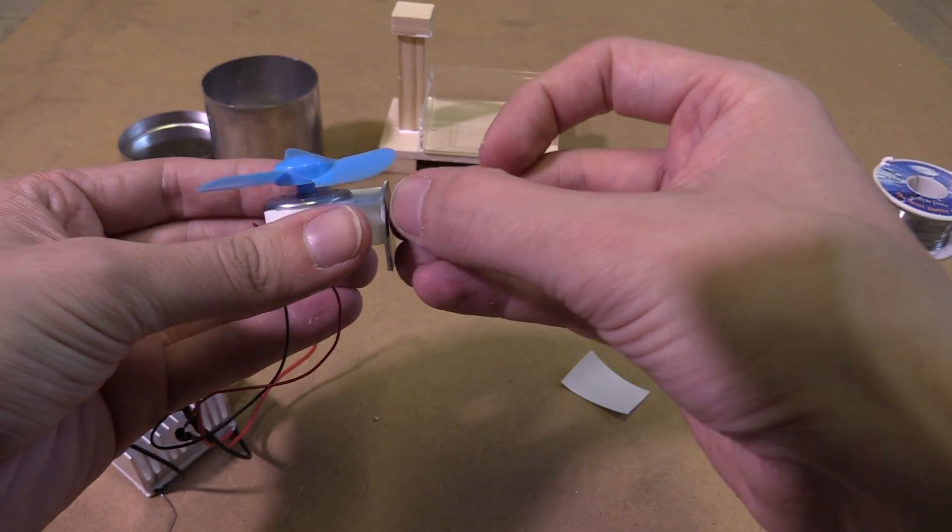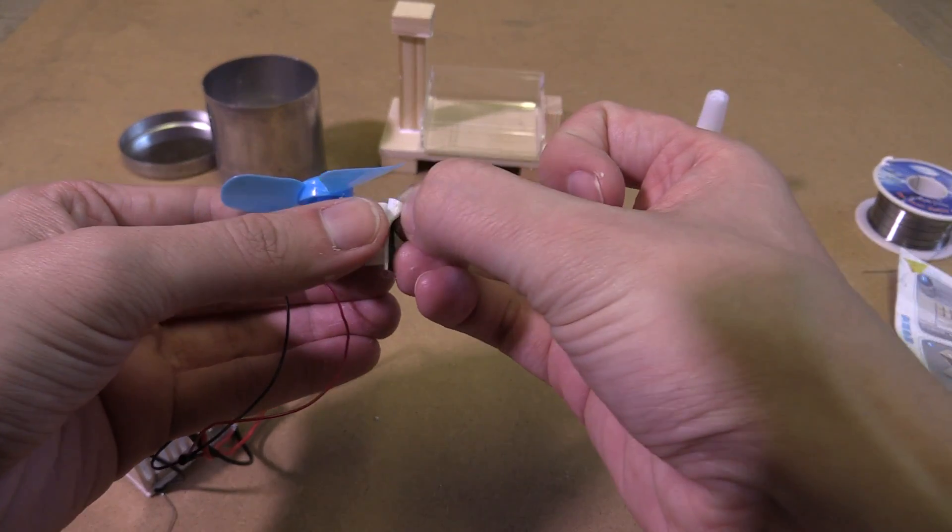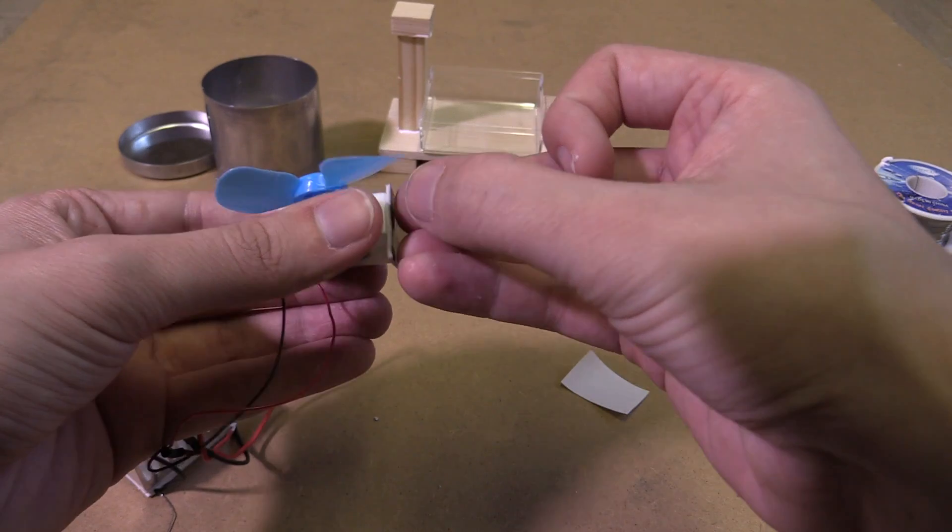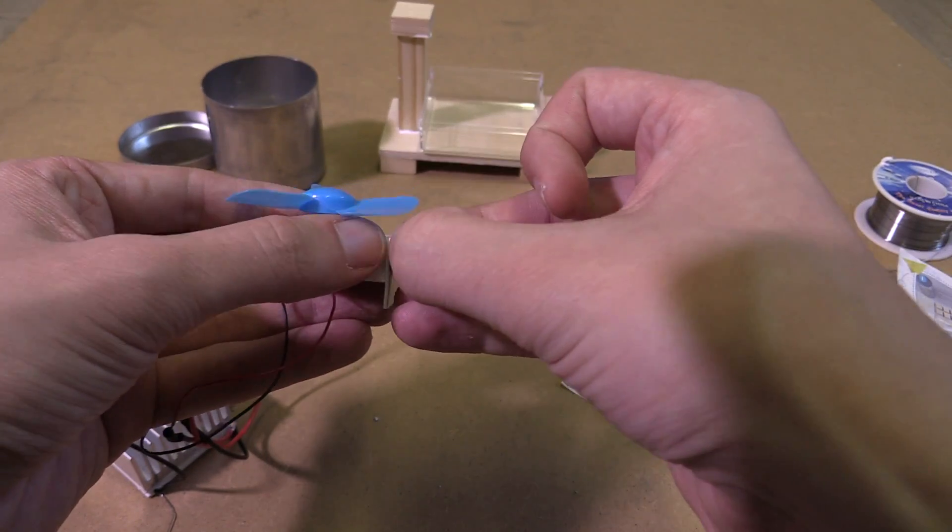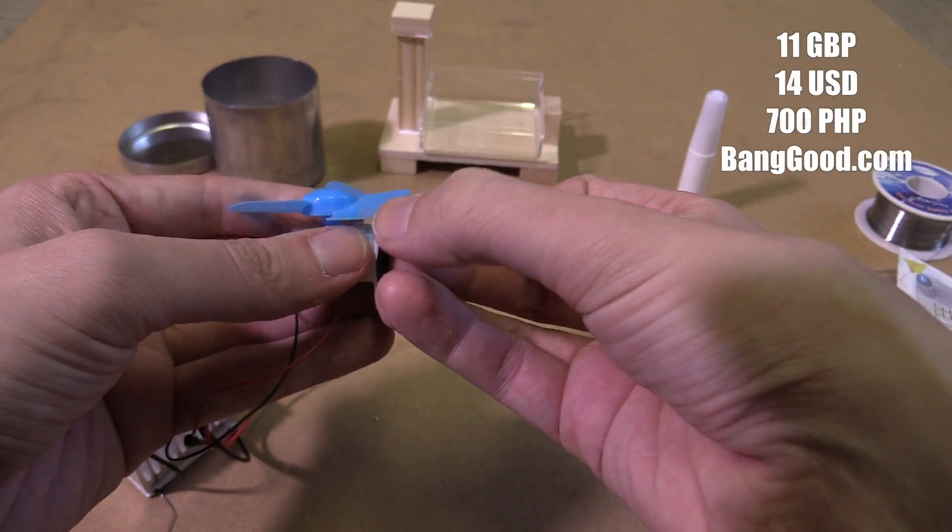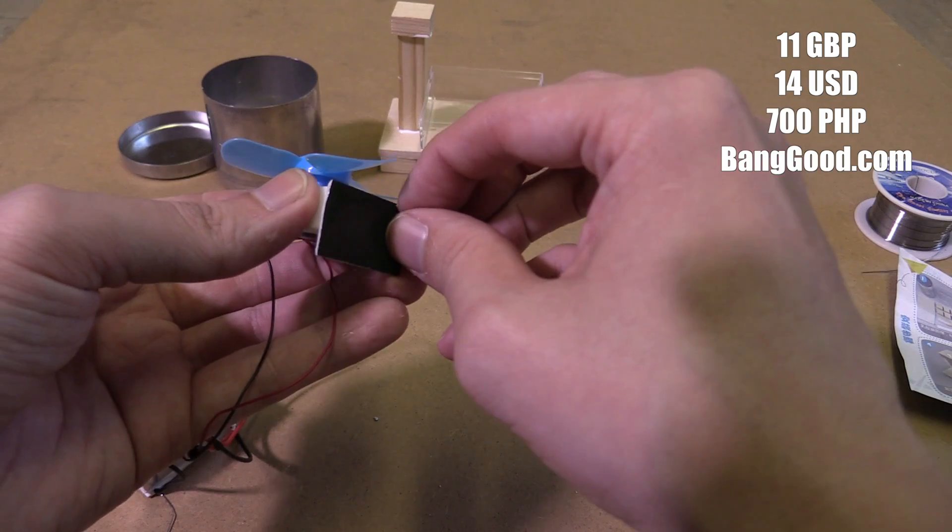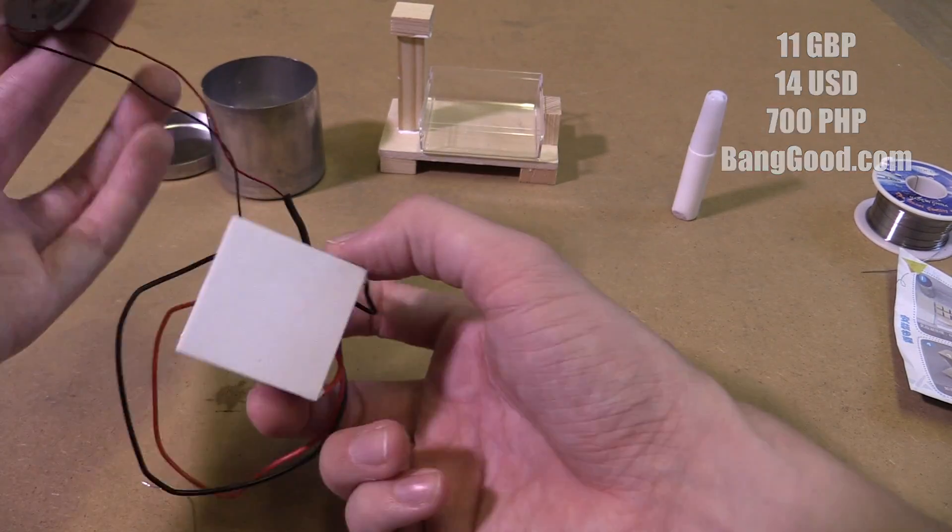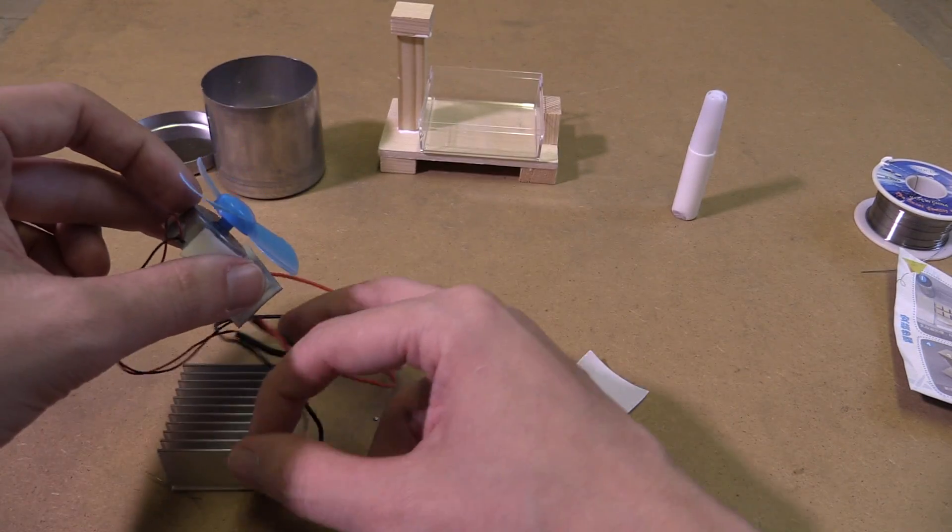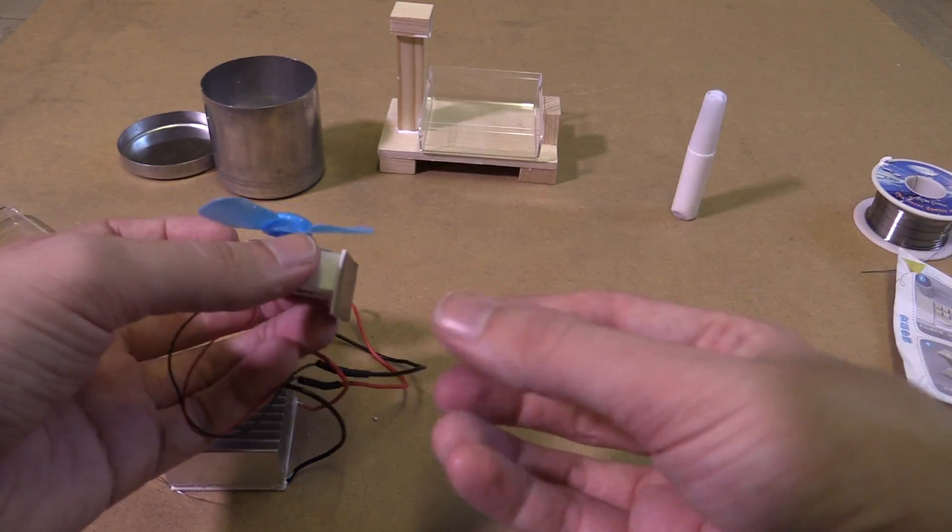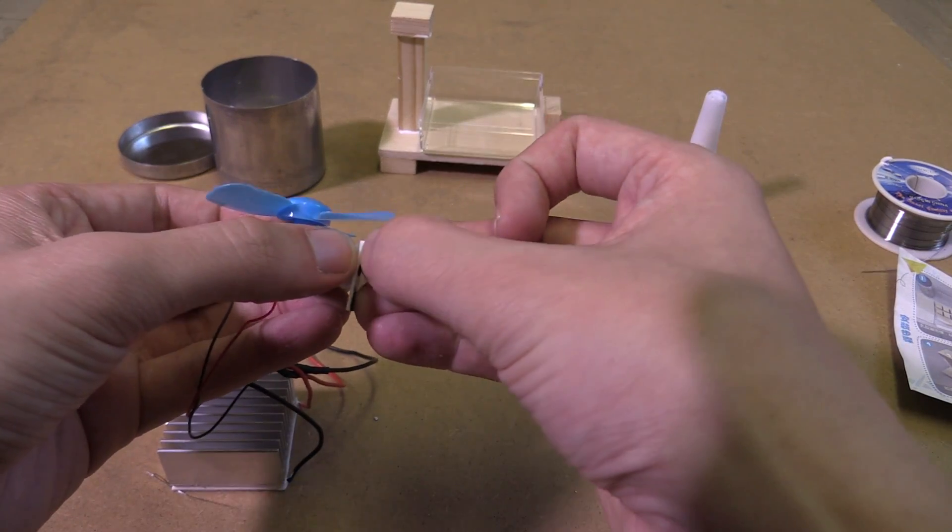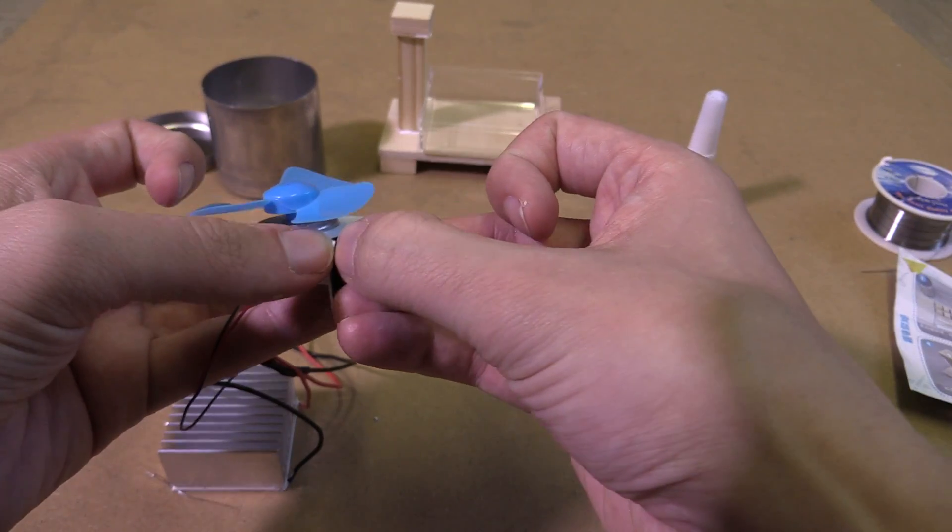This definitely feels like a very cheap kit. I don't think it was that cheap. I'll overlay it on the screen but it wasn't that cheap considering all you're getting really is a Peltier module, a heatsink, a little motor and then some scraps of wood. But yeah I guess they're charging a lot because it's a kit.